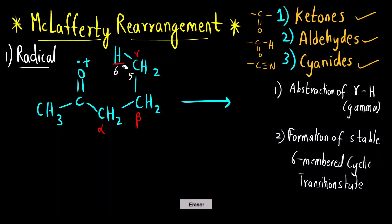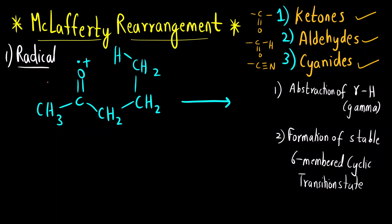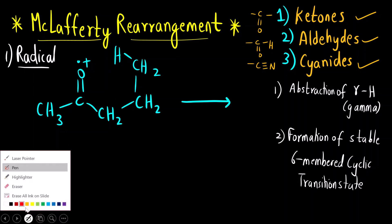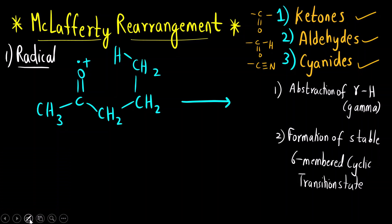Now there are two mechanisms of McLafferty rearrangement. One, we can follow the radical mechanism, which is a little bit more involved with one or two extra steps. The second is we draw an arrow-pushing mechanism. First let us see how a radical mechanism takes place.